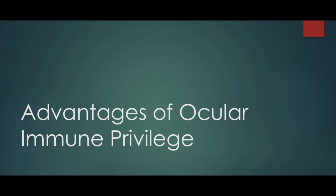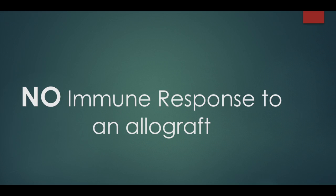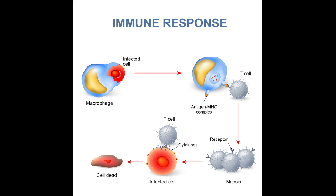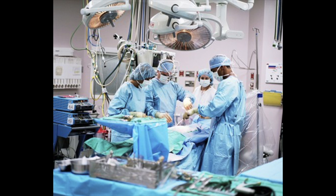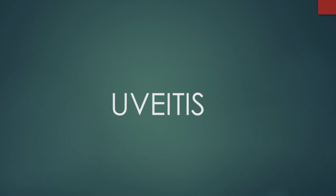What advantages does ocular immune privilege give us? One of the advantages is the lack of an immune response to the introduction of an allograft, which is tissue taken from one person in order to be transplanted into a different person. This is especially useful when we consider tissue transplantation.